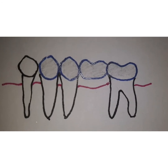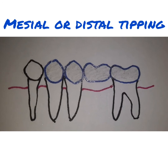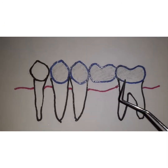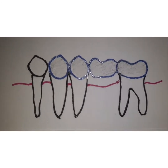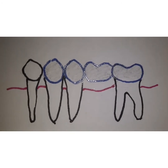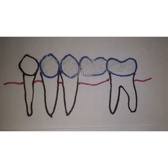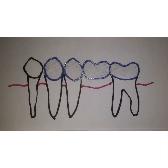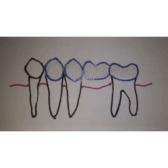Another clinical situation can be where there is mesial or distal tipping or changes in axial angulation. There could be mesial tilting or distal tilting of teeth. In these cases, you will also require an increased number of abutments for support, because there might be some bone loss associated with that abutment tooth.